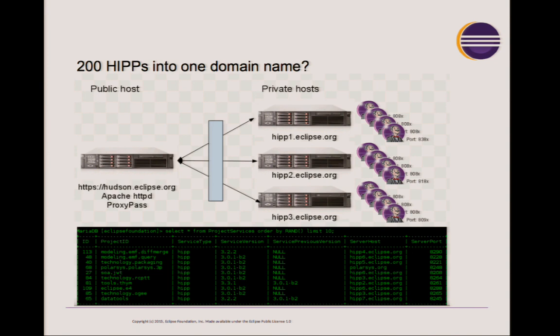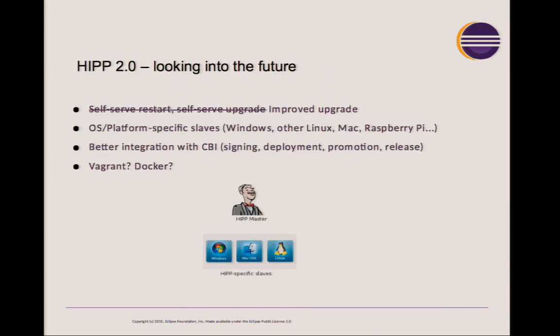So that's a brief overview of how the Hudson Instances Per Project works at Eclipse. Looking forward — we went from having no CI system with projects building everywhere, to now having CI systems that everybody, including yourself even if you're not on any Eclipse project, can peek into. You can look at the latest milestones, look at the build logs, and extract information. That puts us in a much better place.